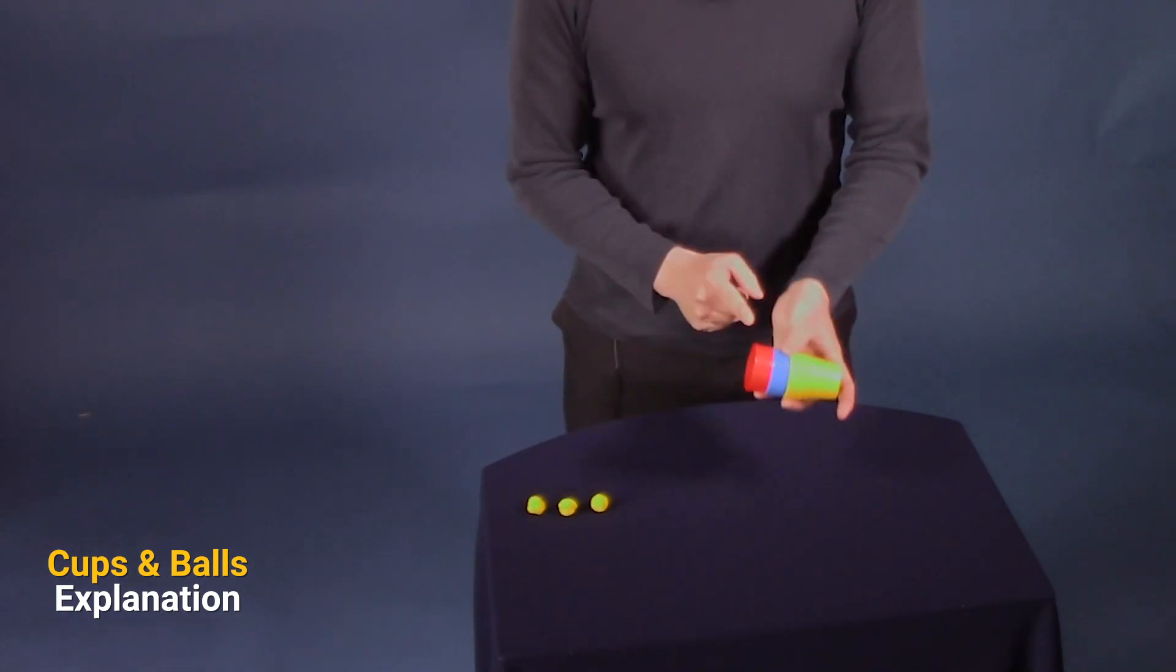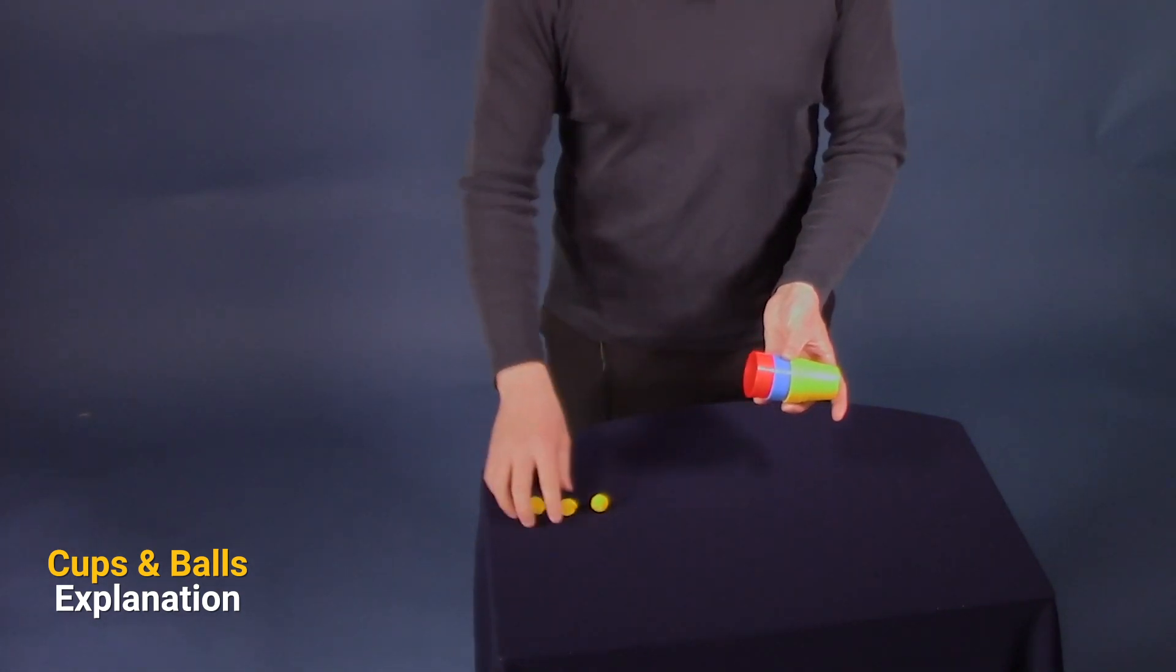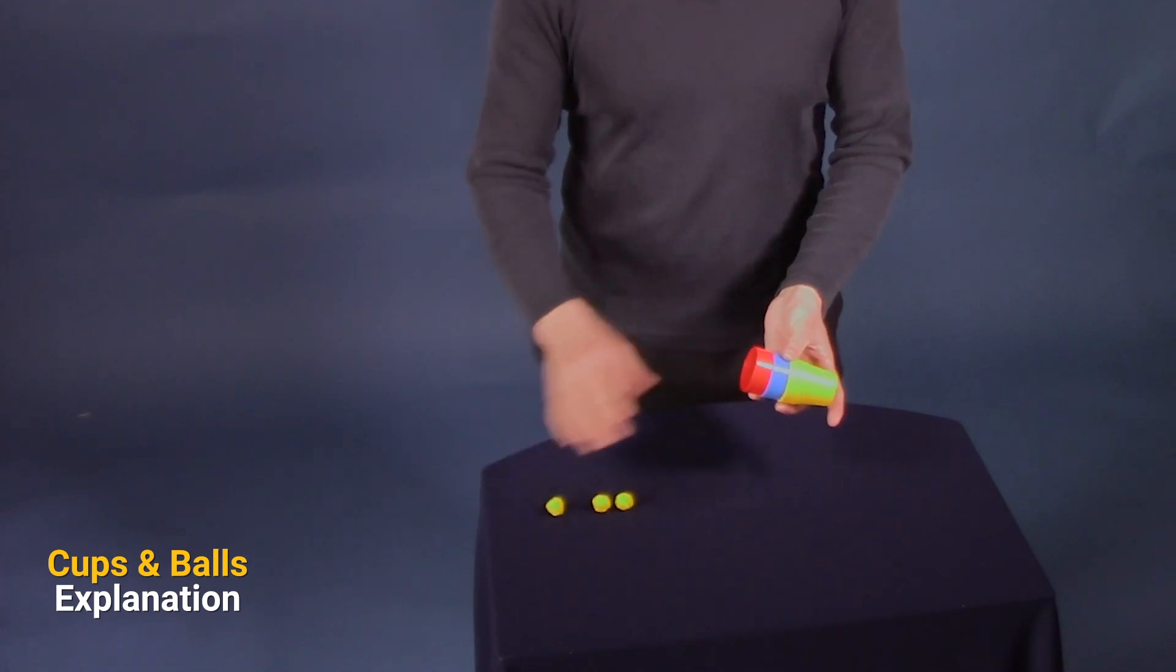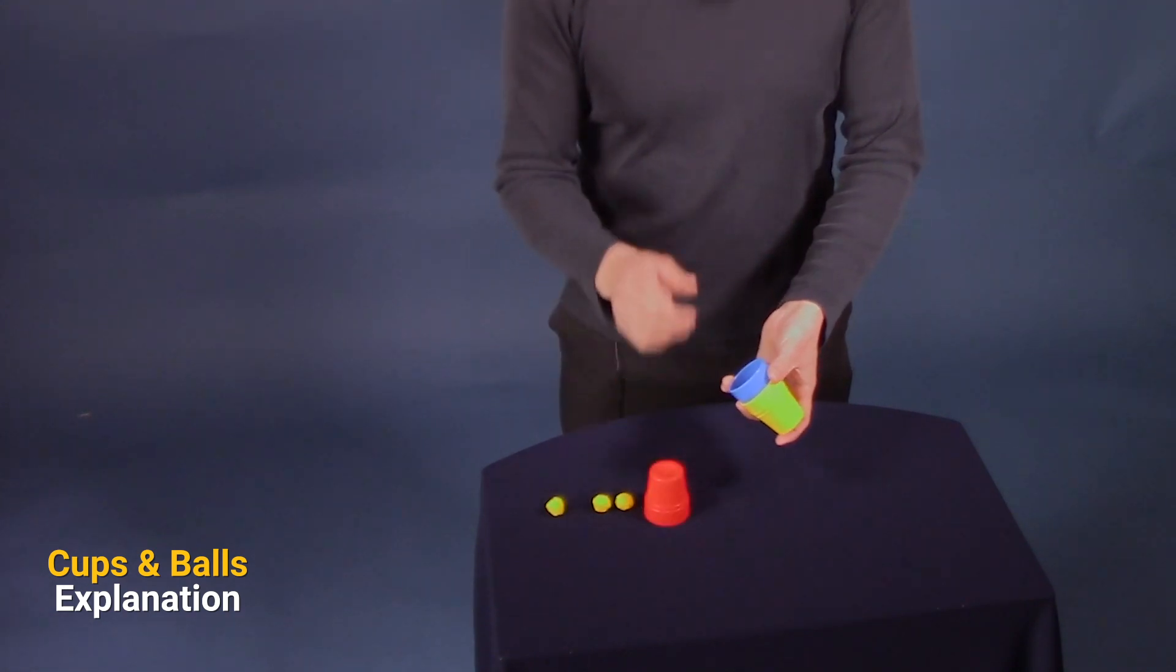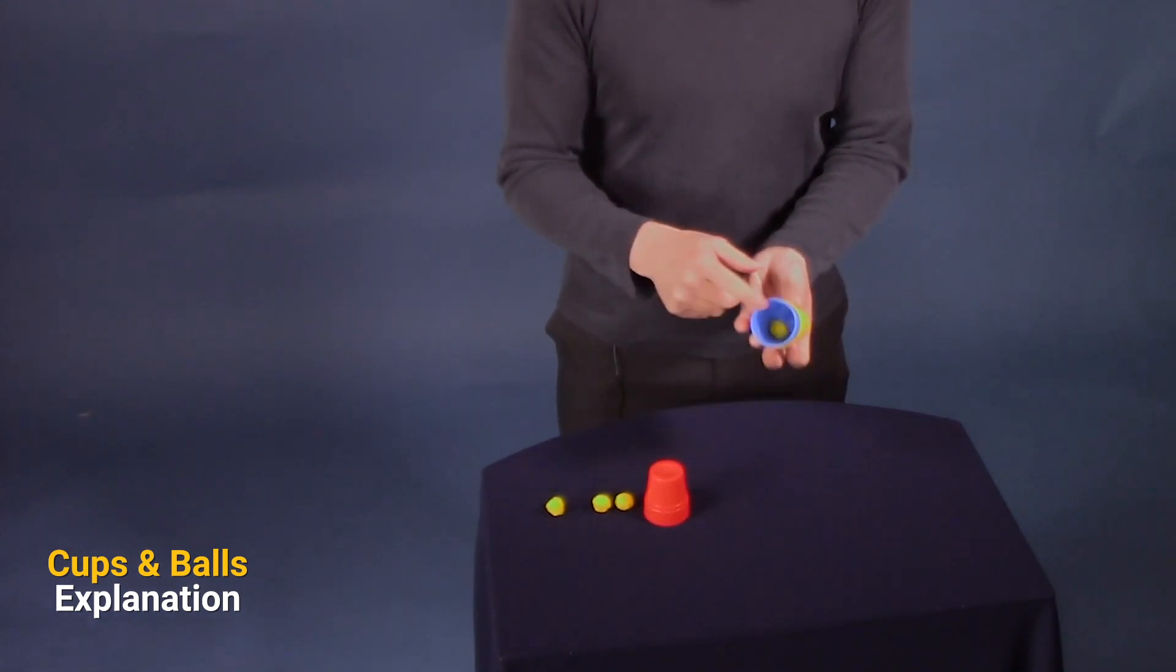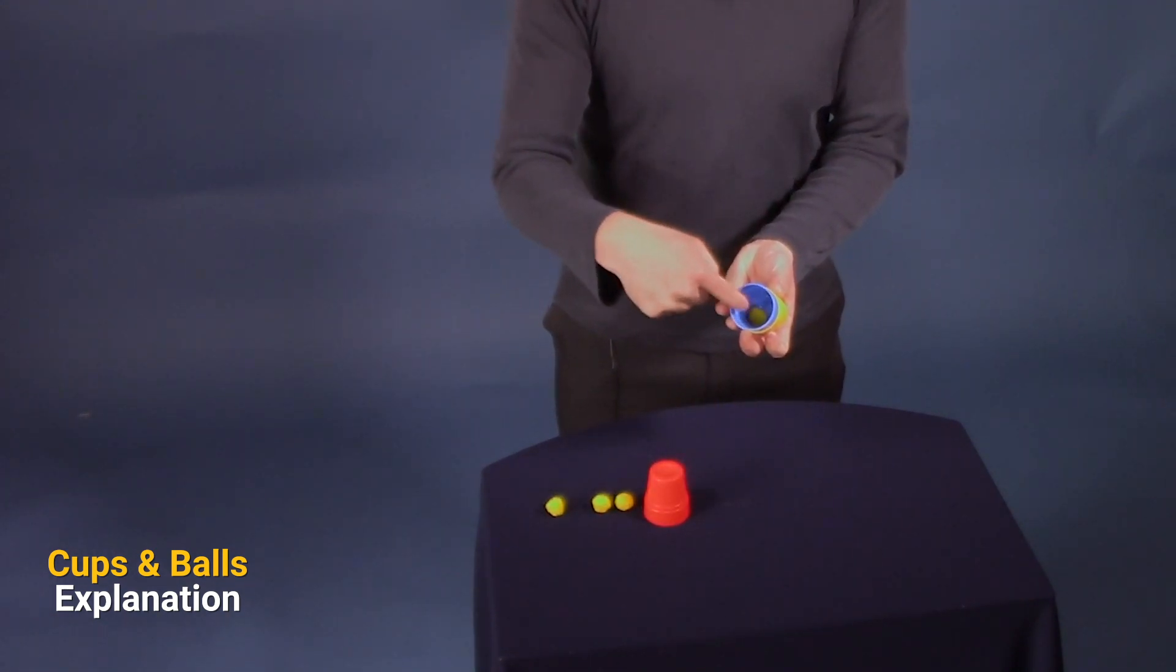So, you start with three cups and three balls. You tell the audience, I am going to do some magic with these cups and balls. Put one on this end. Now, when you put the middle cup down, which will always have a ball inside of it,